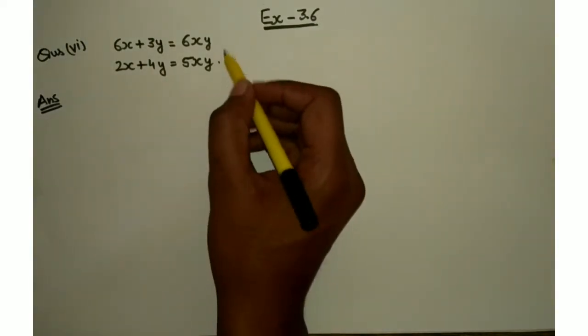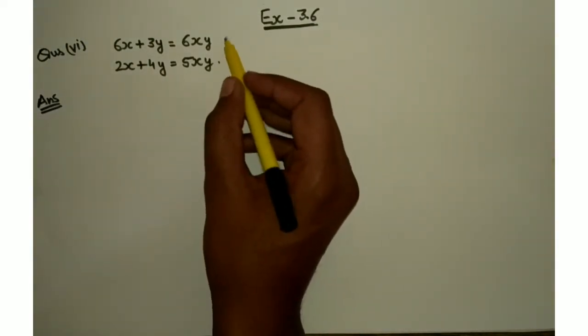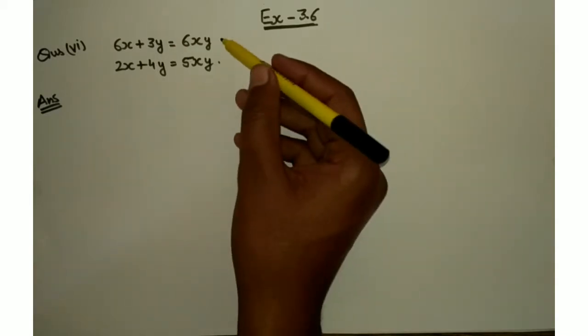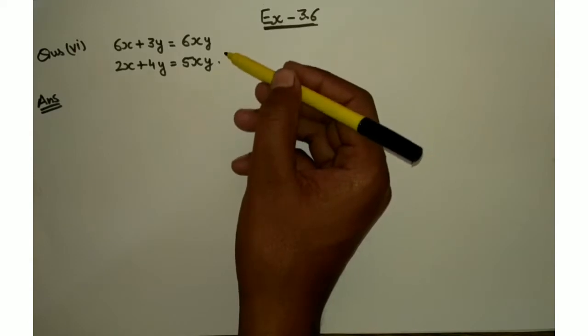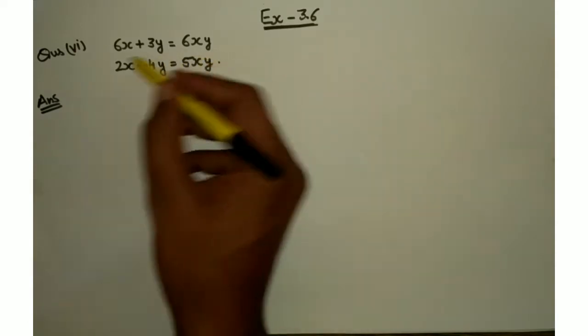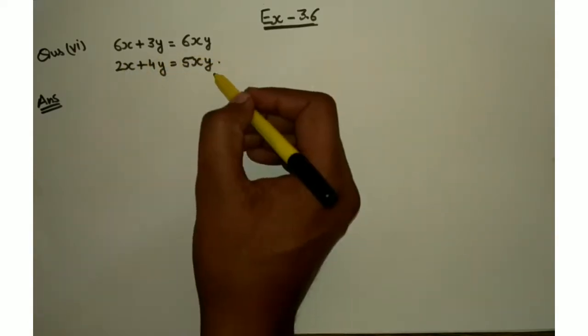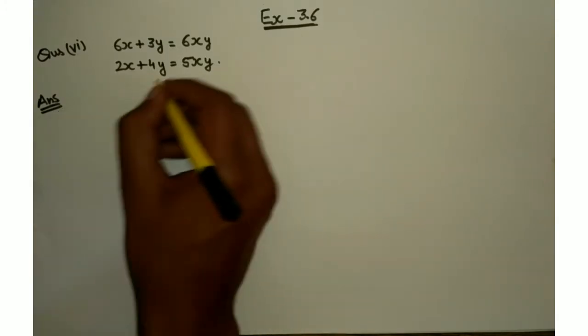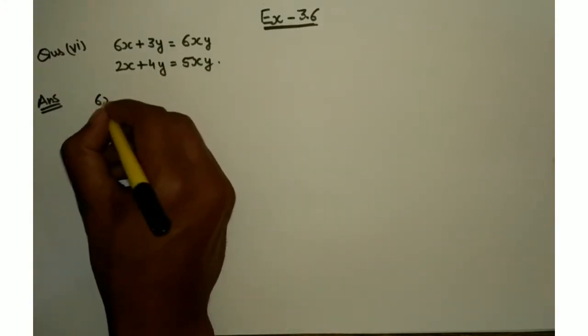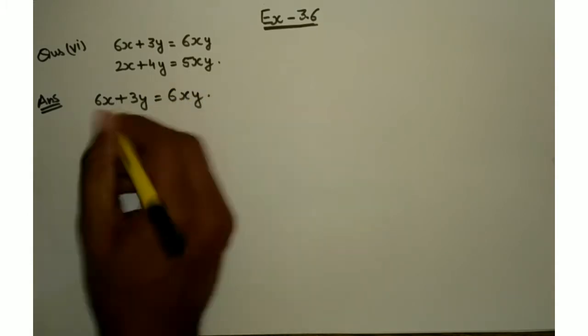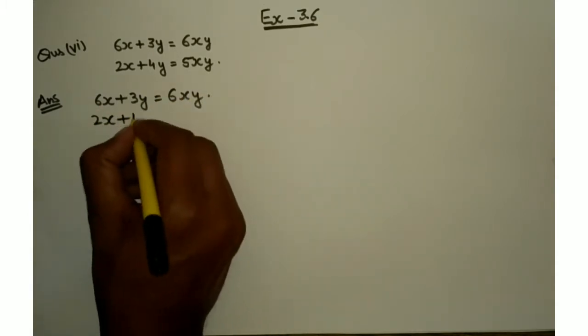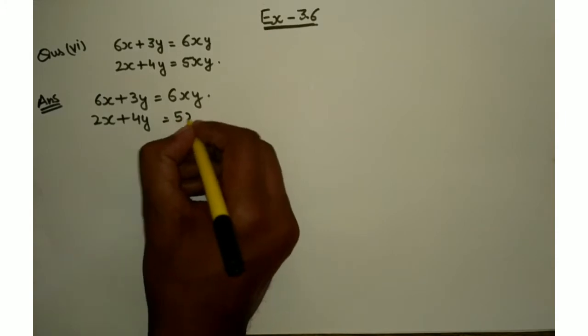Hello students, let us solve this linear pair of equations. To solve this equation, we have different methods, but we will solve using this method. Let me first write down these linear equations: 6x plus 3y equals 6xy, and 2x plus 4y equals 5xy.